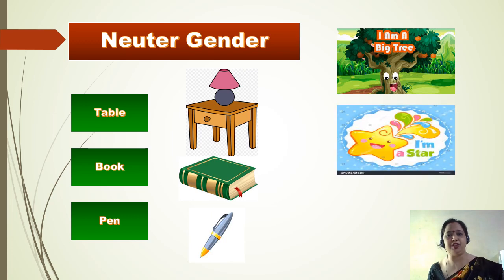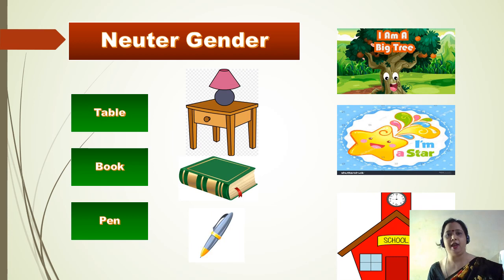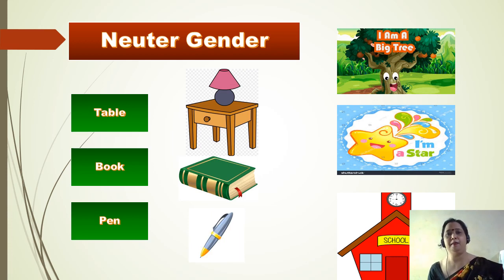Star, which shines brightly at night. School, a place where we go to study. Apart from that, there are many neuter genders like mountain, street, car, chair, paper, pencil, computer, etc. We use all these words regularly in our day-to-day life.